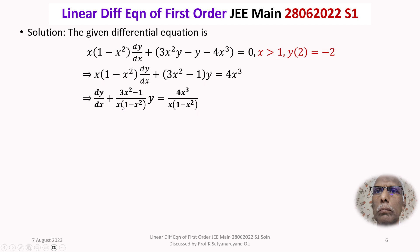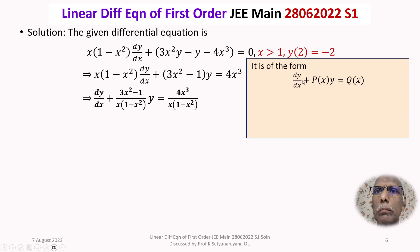With x(1 - x²) in the denominator, we encounter no problems because x is given to be greater than 1. When x > 1, x is not zero and 1 - x² is also not zero. That is the reason why the condition x > 1 is given. This differential equation is of the form dy/dx + P(x)·y = Q(x), and in our case P(x) = (3x² - 1) / [x(1 - x²)] and Q(x) = 4x³ / [x(1 - x²)]. It is a first-order linear differential equation in y.